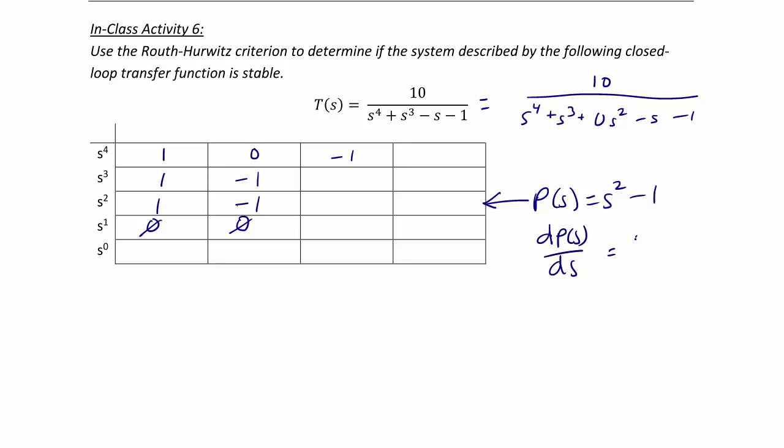So if I take the derivative of p of s with respect to s, that's equal to 2s. So we come down to our s1 row, and we put a1 here, where a1 is equal to 2, and this is still 0.